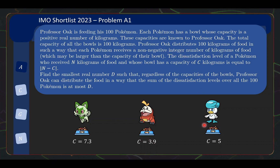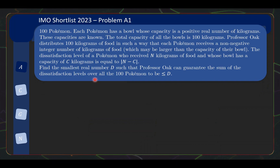The capacity is any real number — that's the difference between the amount of food and the capacity. The dissatisfaction level of a Pokémon who receives N kg of food and whose bowl has capacity C kg is the absolute difference between N and C. For example, if I give a Pokémon 4 kg of food, the dissatisfaction is 0.1. We need to find the smallest real number D such that regardless of the capacities, Professor Oak can distribute the food so that the sum of dissatisfaction levels over all 100 Pokémons is at most D.